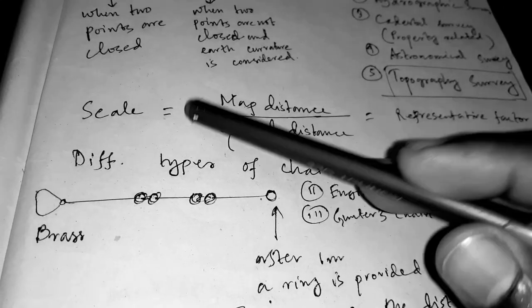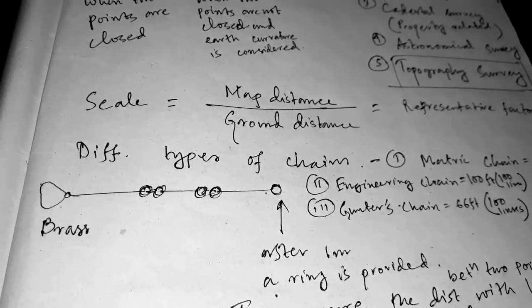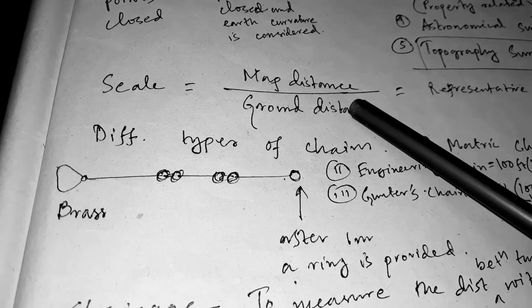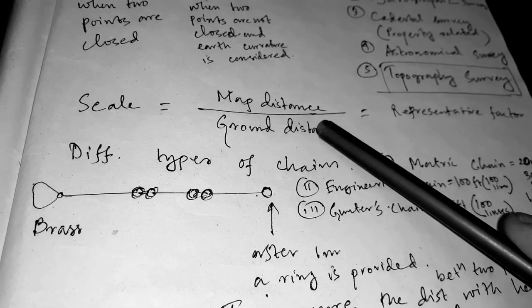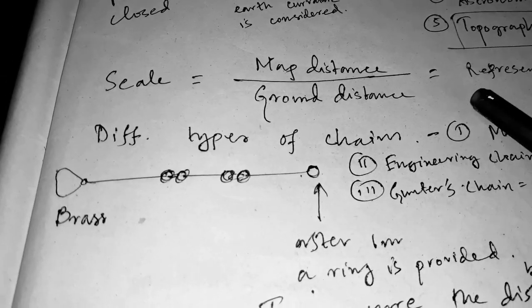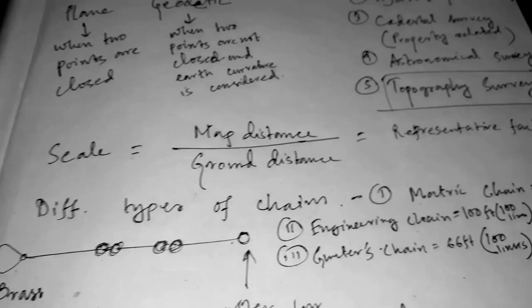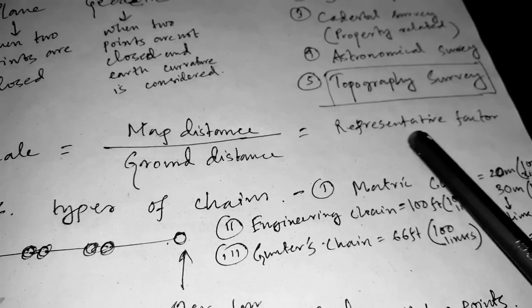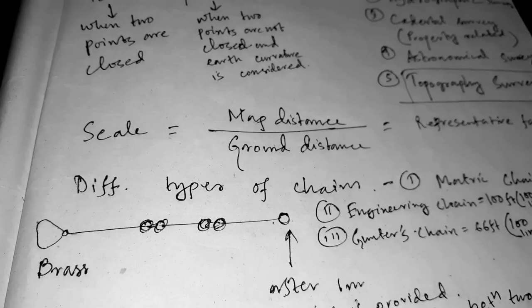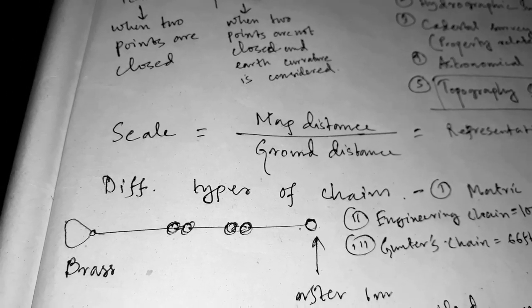Now what is scale? Scale is actually the map distance by ground distance. It is called scale or it is also called the representative factor. It is the ratio of actual distance to the map distance.